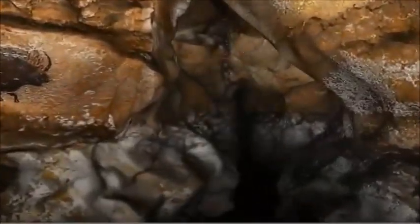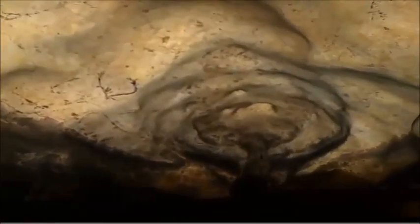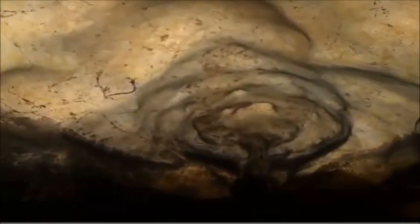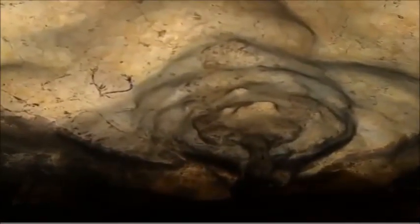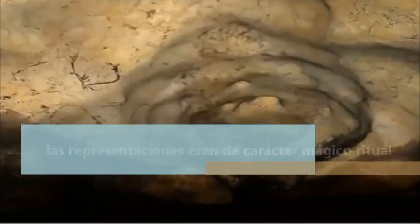Las técnicas para obtener los colores eran una mezcla de grasas de animales, jugos vegetales, tierra de variados colores y madera quemada para las siluetas en negro.